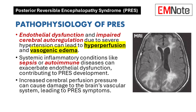The exact mechanisms underlying PRES are not fully understood, but several theories have been proposed. Endothelial dysfunction due to severe hypertension may lead to impaired cerebral autoregulation, resulting in hyperperfusion and subsequent vasogenic edema due to disruption of the blood-brain barrier. Additionally, conditions such as sepsis or autoimmune diseases can exacerbate endothelial dysfunction, contributing to the development of PRES.